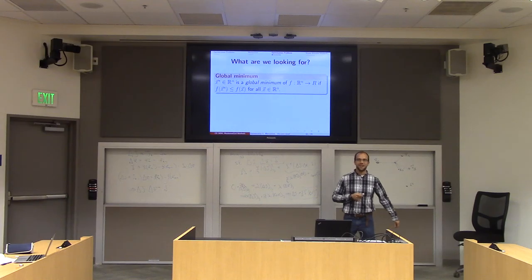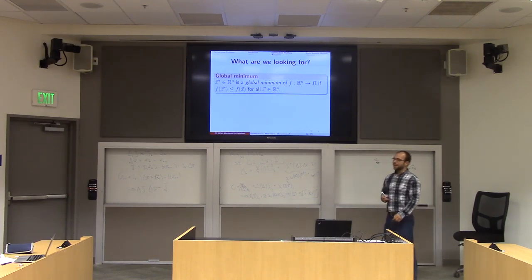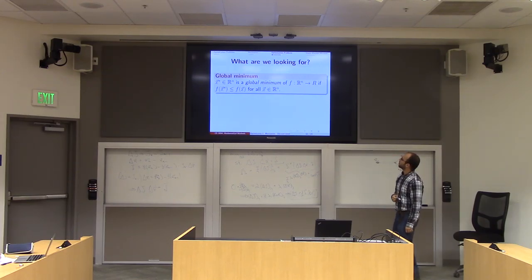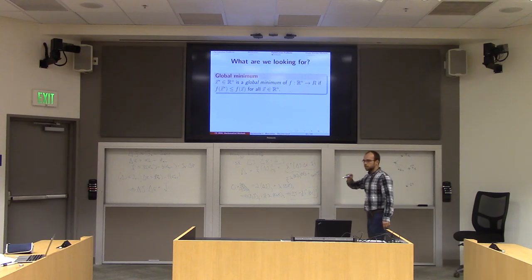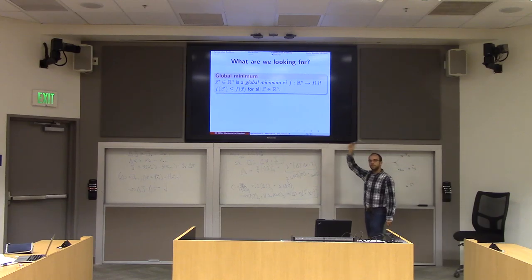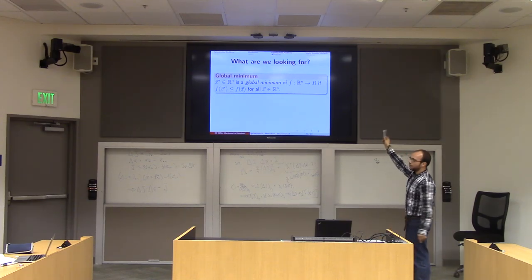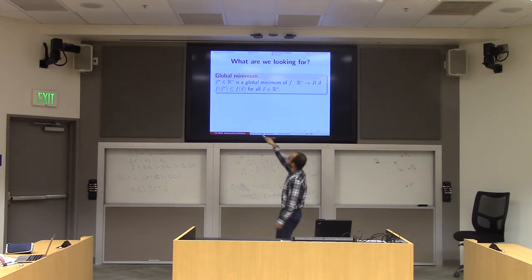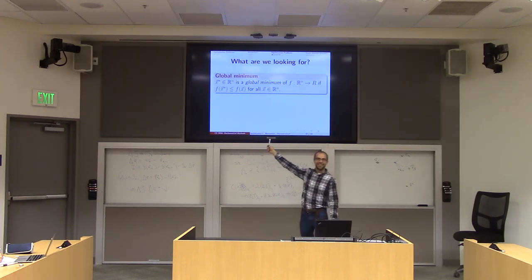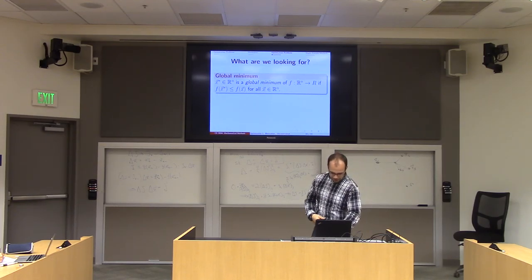What are we looking for when we solve an optimization problem? A global minimum of a function f from R^n to R is some point x* where f(x*) is smaller than all other f(x)'s. A local minimum is a point x* such that in some epsilon-neighborhood — some small ball around x* — it has the smallest value.